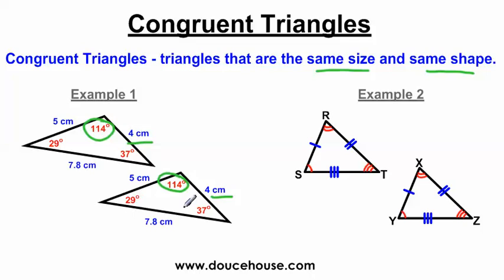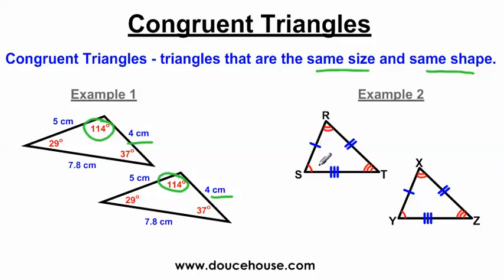But you don't always have to use numbers to indicate sides and angles are congruent. In math, we can also use little symbols. For example, this side here has one tick mark, and so does this side right here, so I know side RS is congruent to side XY because they each have one tick mark. Side RT has two tick marks and side XZ has two tick marks, so those two sides are congruent. Tick marks indicate that sides are congruent. Angles are marked congruent with little arcs — angle S has one arc and angle Y has one arc, so since they have the same number of arcs, these two angles are congruent.